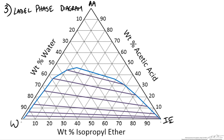Our feed is 78% water, so we are going to be somewhere along this line, and 30% acetic acid. Since that adds up to 100%, our point must be right here, which makes sense since it is 0% ether.